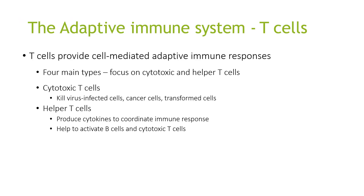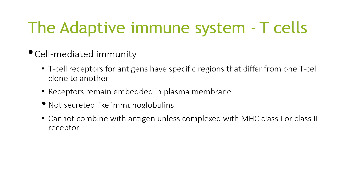T cells provide cell-mediated adaptive immune responses. There are four main types, but we focus on cytotoxic and helper T cells. Cytotoxic T cells kill virus-infected cells, cancer cells, and transformed cells. Helper T cells produce cytokines to coordinate the immune response and help to activate B cells and cytotoxic T cells.